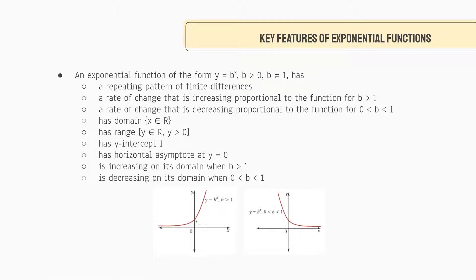We have a y-intercept at y equals 1, because when x equals 0, anything to the power of 0 is 1. We also have a horizontal asymptote of y equals 0. The function is increasing on its domain when b is greater than 1, and it is decreasing when b is greater than 0 but less than 1. Take some time to process that before we move on to the next part.